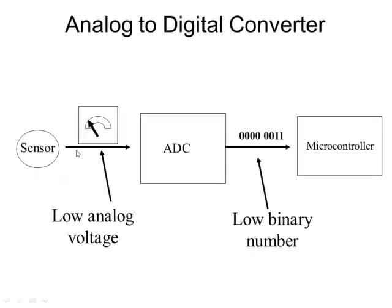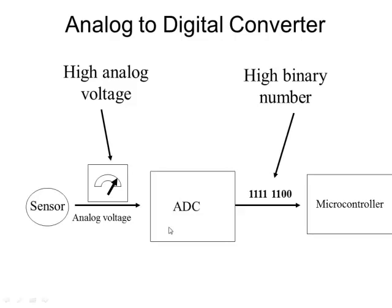Here we see a very small analog voltage. The binary number is going to be proportional to the analog voltage. So a very low analog voltage produces a small binary number, and a large analog voltage produces a really big binary number.